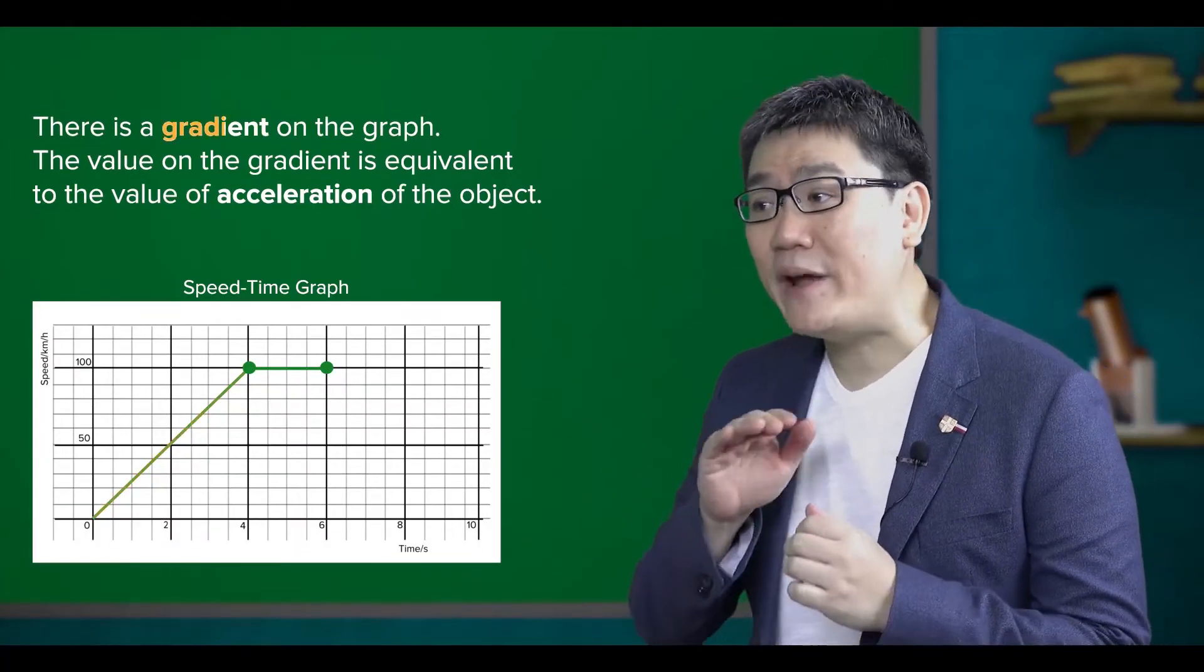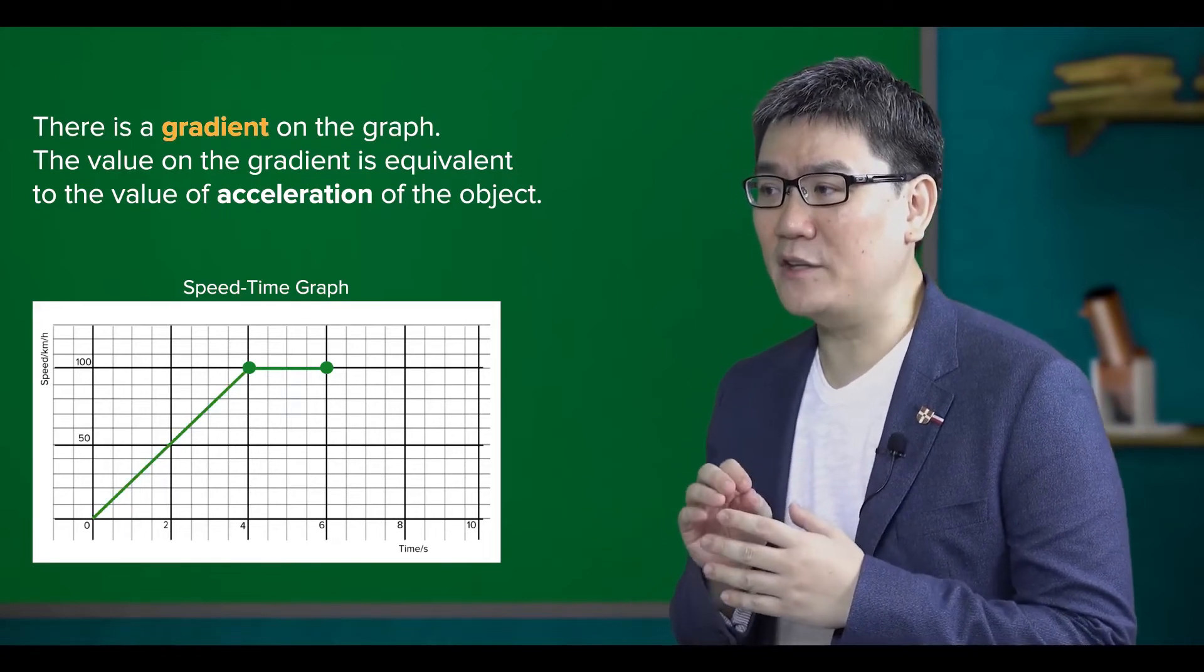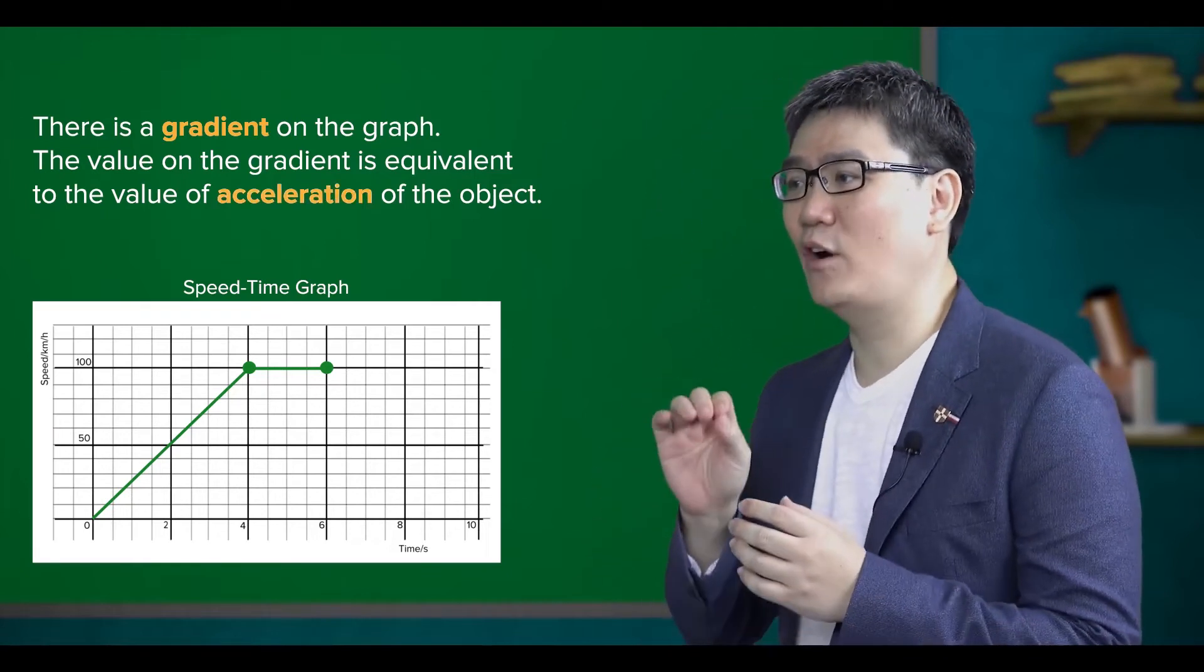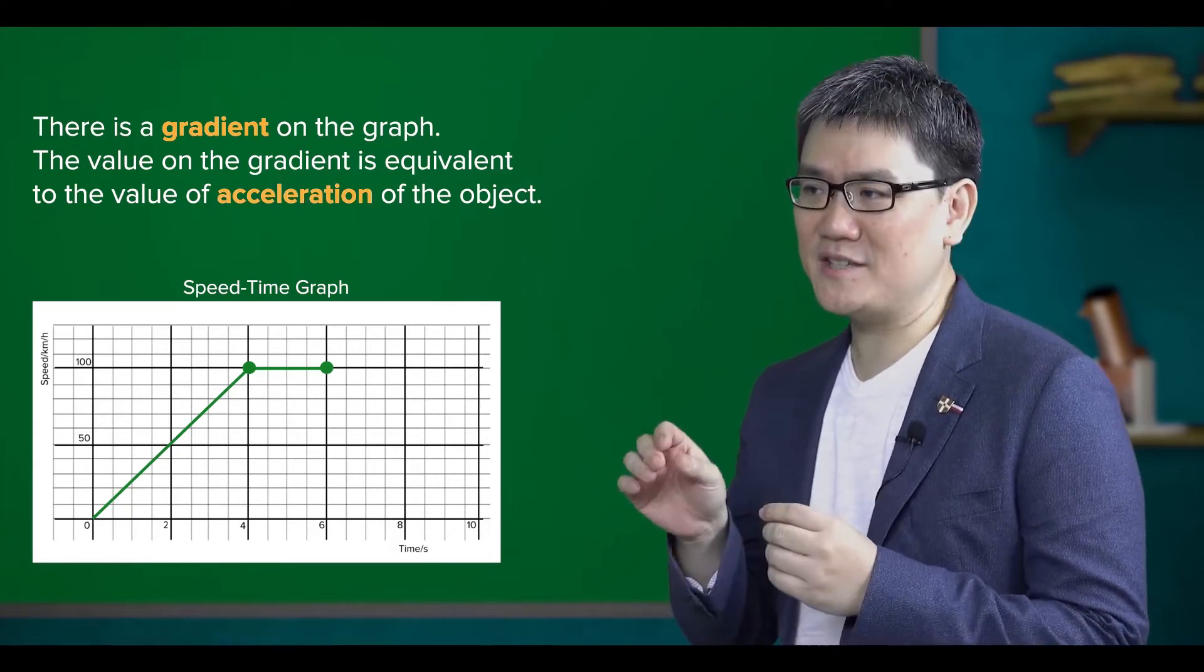As you can see, there is a gradient on the graph. The value of the gradient is equivalent to the value of acceleration of the object, in this case the Mustang.